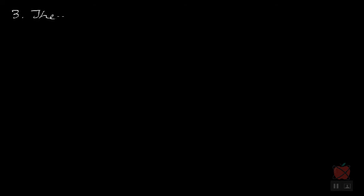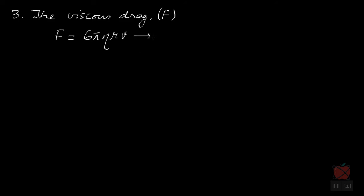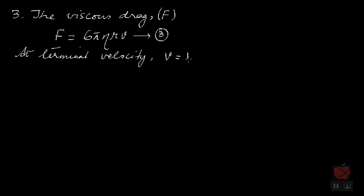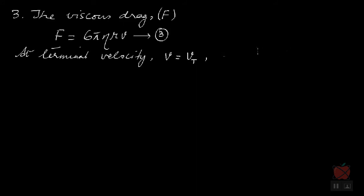The third force is the viscous drag F. From Stokes' law, F equals 6πηrv — this expression was derived previously. Now, when the body attains terminal velocity, equilibrium is reached: the total upward force balances the total downward force. At terminal velocity, where v equals vt, the total upward force equals the total downward force.